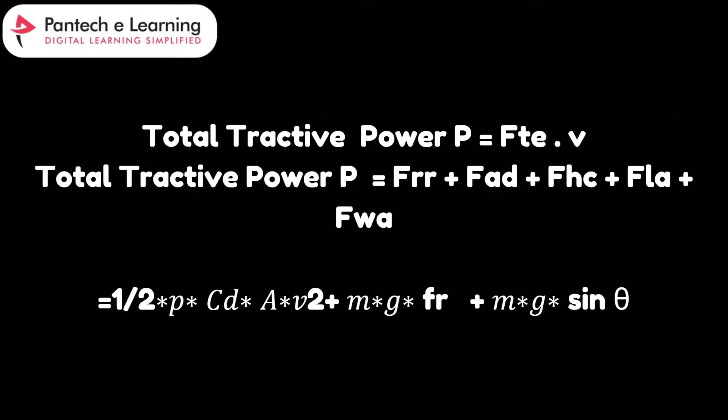We have to find the total tractive power. The formula is P equals total tractive force multiplied by velocity. The total tractive force includes rolling resistance force, aerodynamic force, hill climbing force, acceleration force, and angular acceleration force.